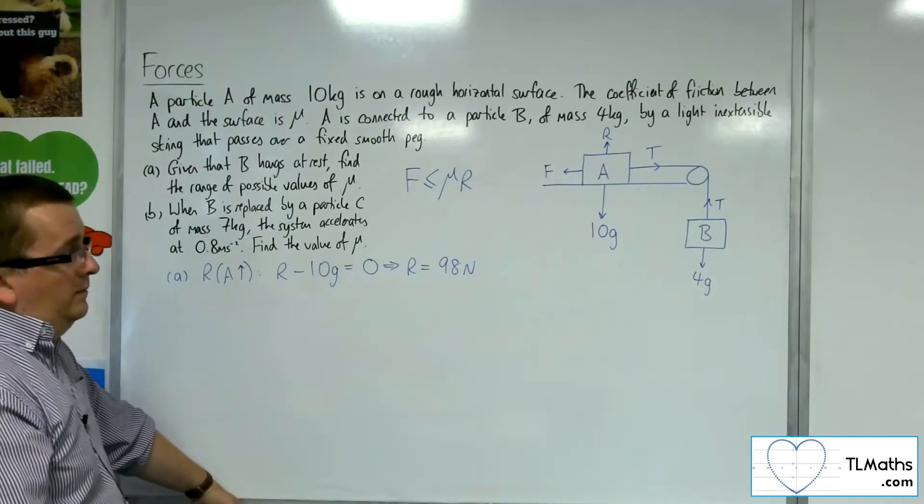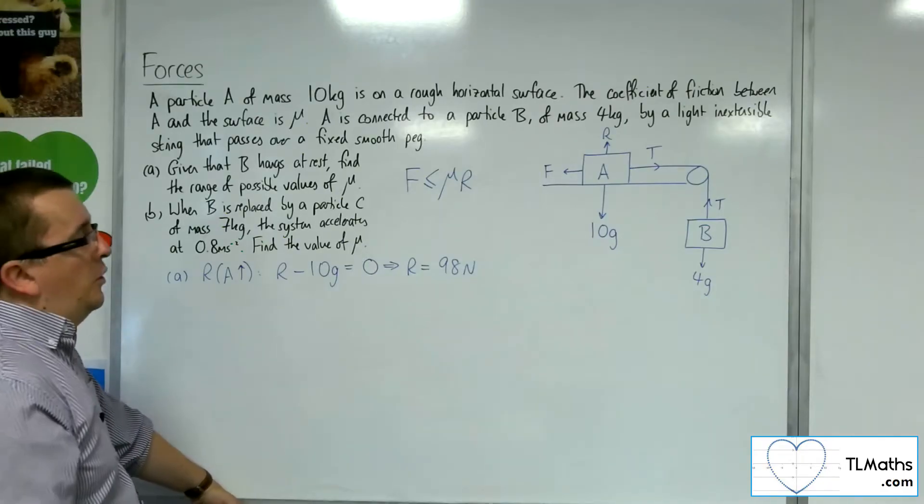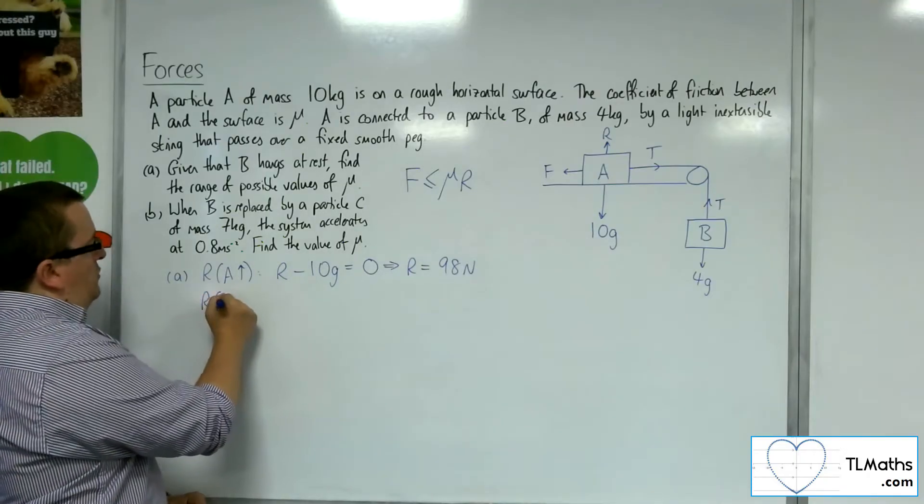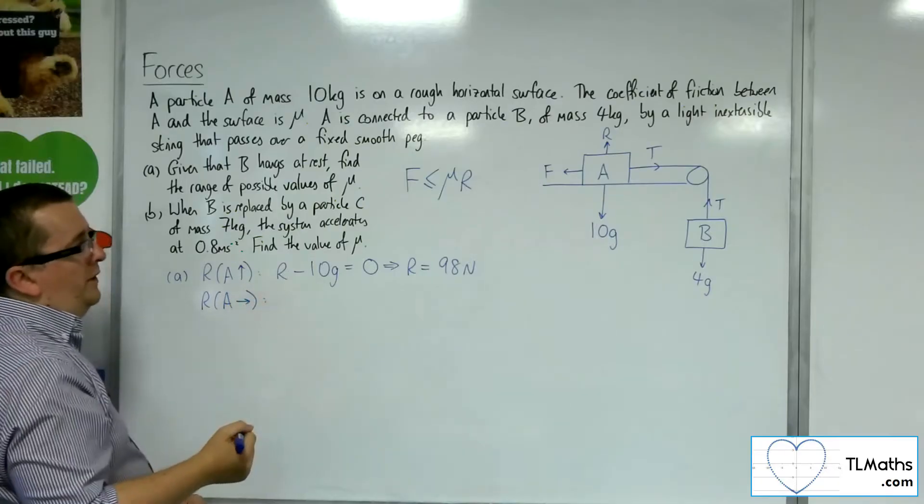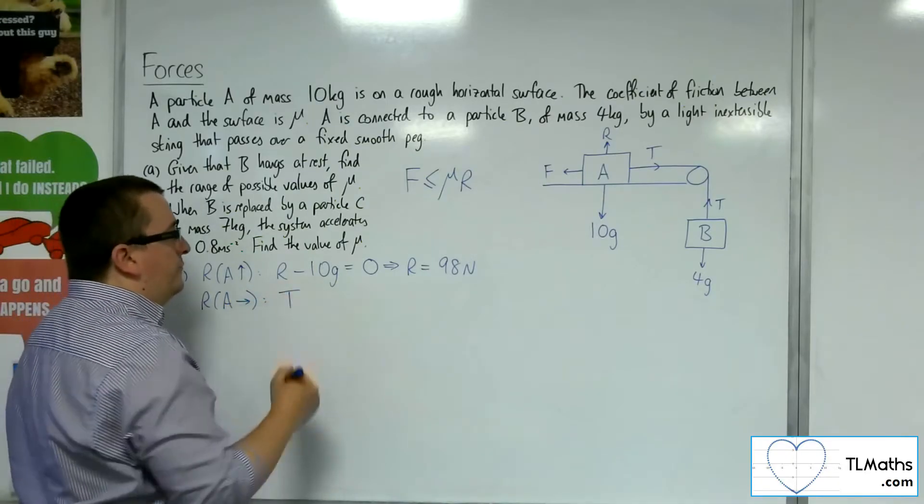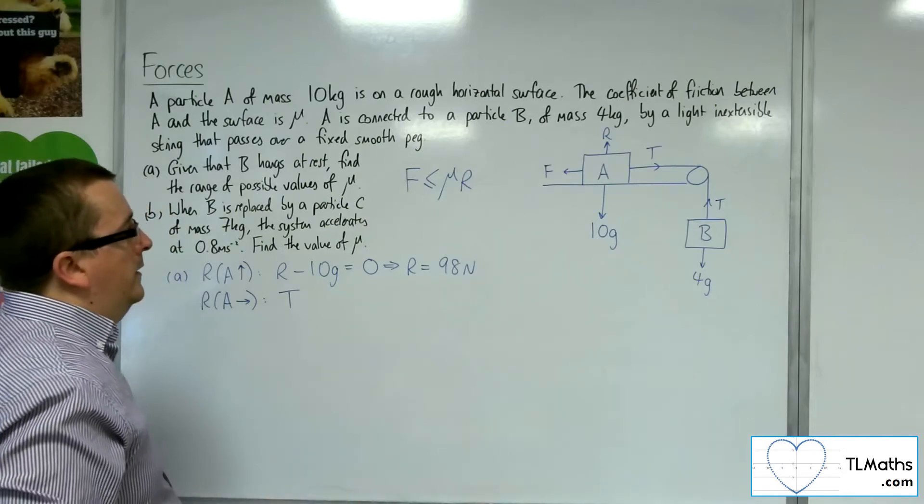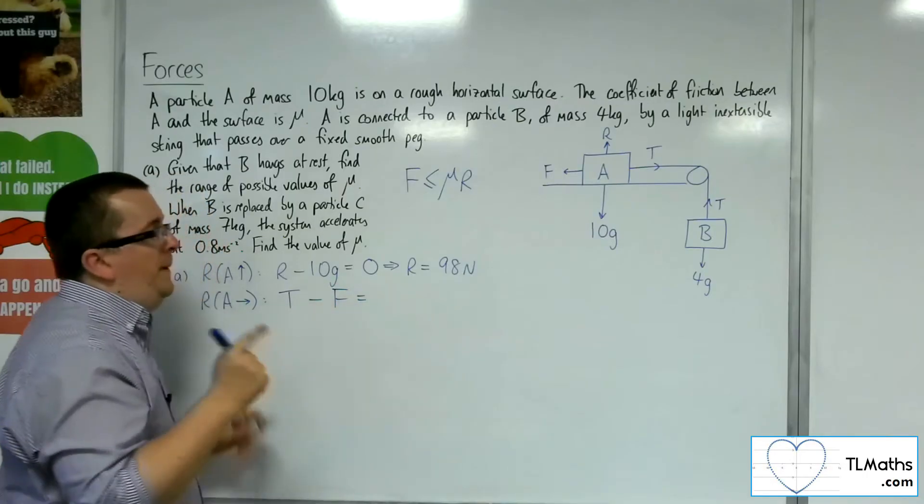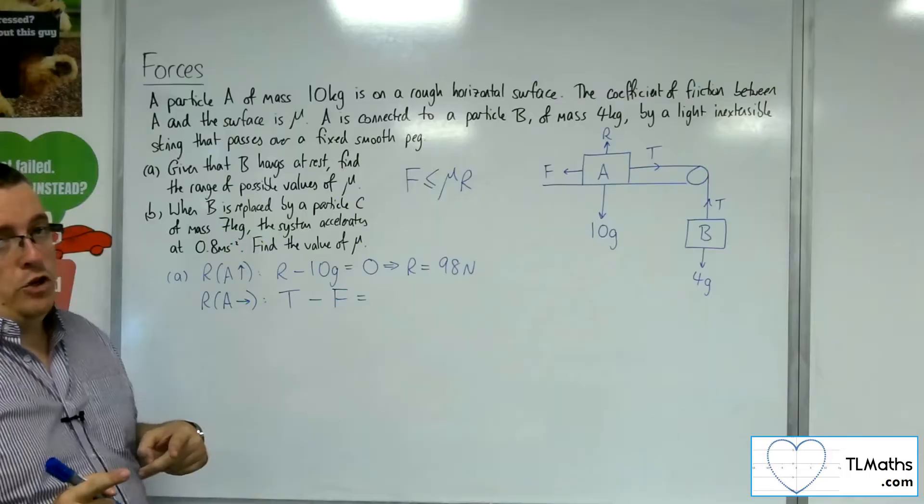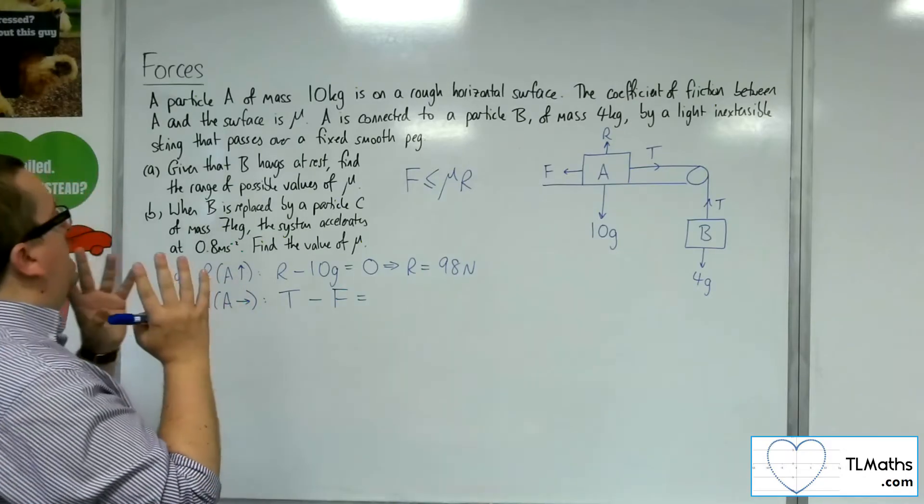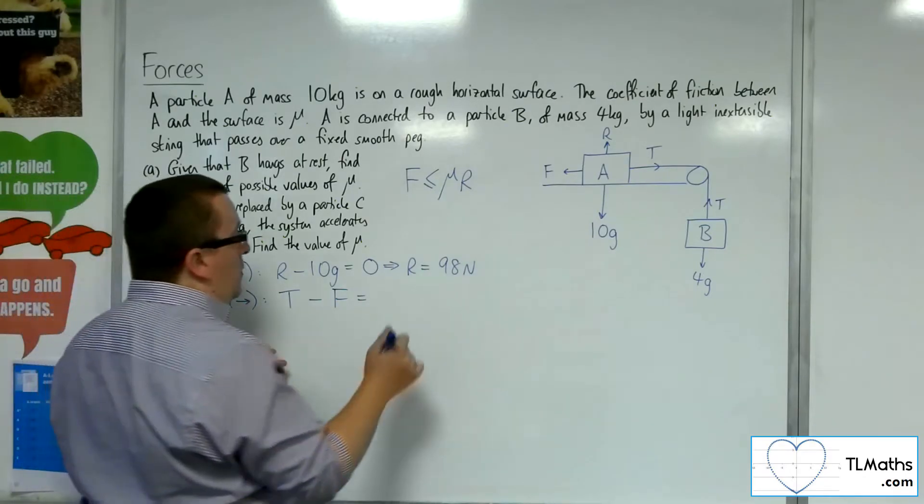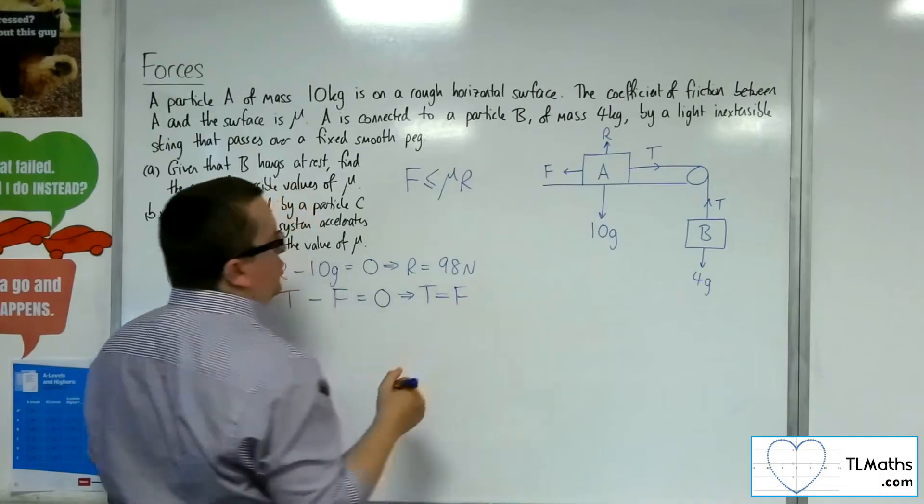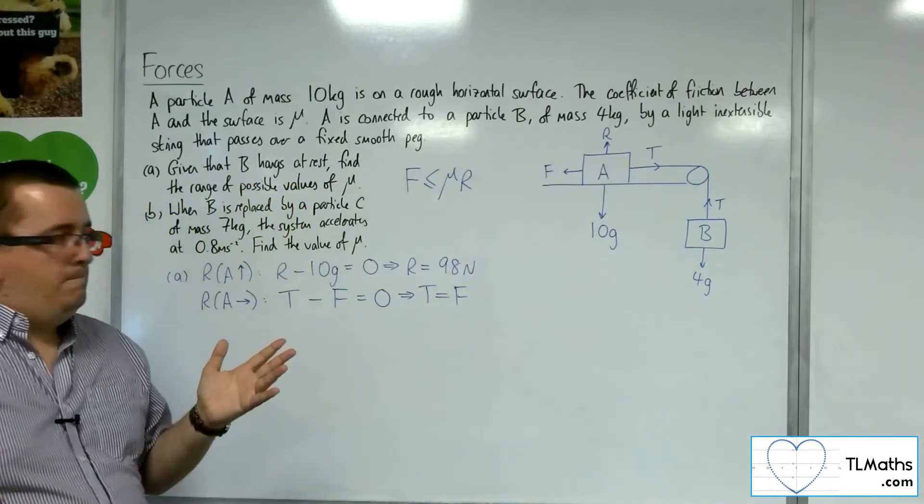So I now know the R in this. Now, what else can I use? Well, if I then look at resolving A horizontally, taking to the right as positive, then I've got the tension in the string take away the frictional force has got to be equal to mass times acceleration. But because the system is at rest, the acceleration is 0, and so that's 0. So I now know that T has got to be equal to the frictional force.